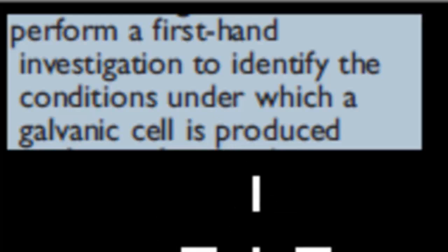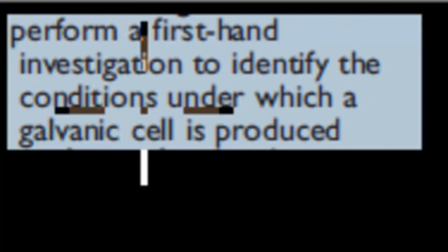Welcome back. In the last video we talked about the parts that make up the galvanic cell, and we defined things like the electrode, the cathode, the anode, and the galvanic cell plus the electrolyte. In this video we're going to cover one of your practicals that we've done in class, one of your experiments. The dot point itself says: perform a first-hand investigation to identify the conditions under which a galvanic cell is produced.